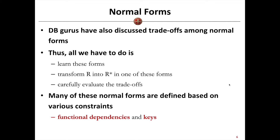We want to reduce some redundancy. However, we also need to ensure we will not divide these relations into very small relations. In other words, we have a trade-off among the normal forms.